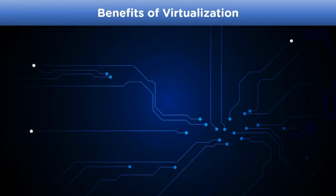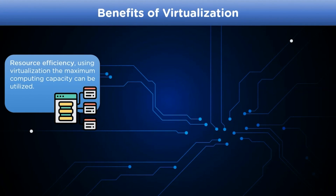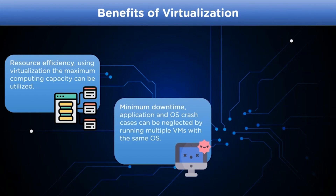The first benefit of virtualization is resource efficiency. Before virtualization, each application server used its own dedicated hardware resources, which were often underused. With multiple virtual machines, maximum utilization of hardware capacity occurs. Another benefit is minimum downtime — crashes of operating systems and applications halt user productivity, but virtualization allows admins to run multiple similar virtual machines simultaneously and switch over working instances in case of a crash, instead of relying on multiple dedicated servers.